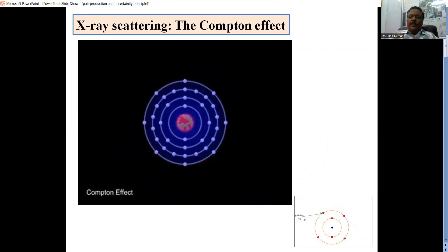You can see in this figure when a gamma ray photon strikes the electron, the electron is pushed in one direction and the photon is scattered in the other direction.